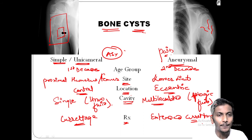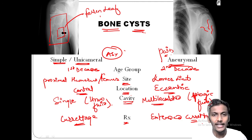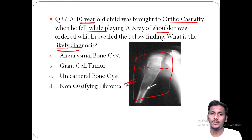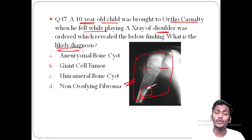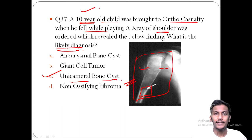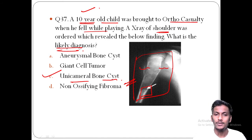The fallen leaf sign (also known as trap door sign) is seen in cases of unicameral or simple bone cyst. This x-ray also shows an arrow indicating the fallen leaf appearance. Therefore, the answer is option C — unicameral bone cyst. Keywords: first decade of life, asymptomatic, incidental finding, fallen leaf/trap door sign.